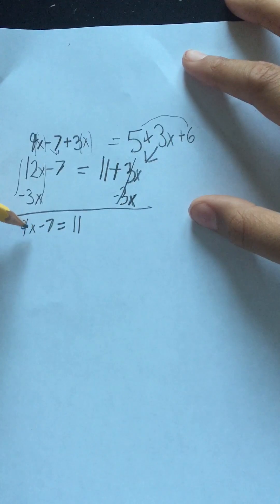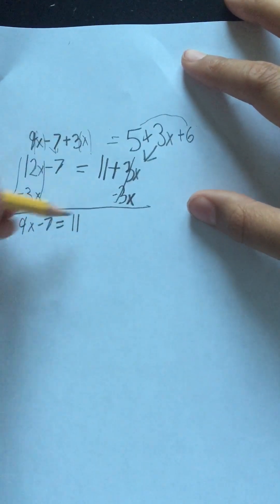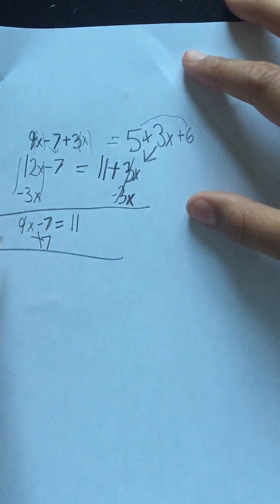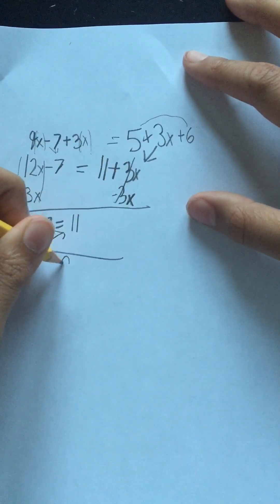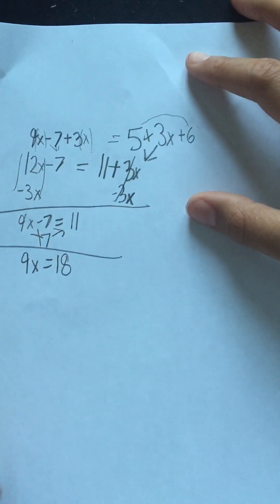Now, what we're going to do is we have the variable on this side and no variable on this side. Since there is something being subtracted over here, we want it on this side so we can have the variable by itself. So, we have 18 is equal to 9x.